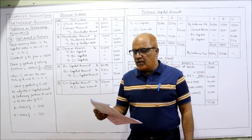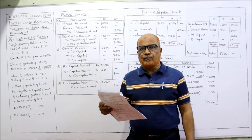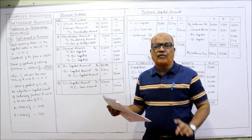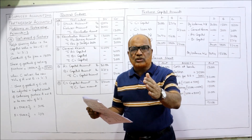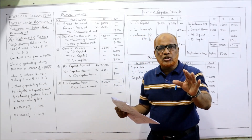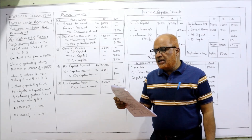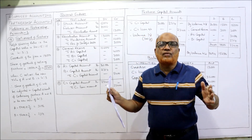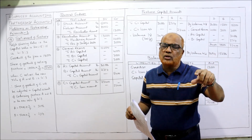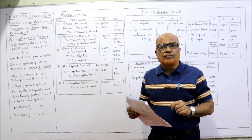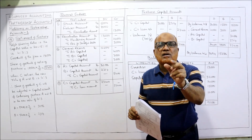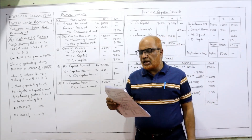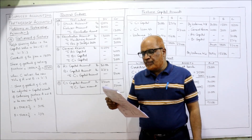The profit sharing ratio is the capital ratio. Capitals are 20,000, 15,000, and 15,000 — so 20:15:15, or simplified, 4:3:3. That is the profit sharing ratio. On the liability side, there is a general reserve. In the case of retirement, the general reserve will be distributed among all partners including the retiring partner. Then capital accounts, cash at bank, debtors, stock, machinery, and fixtures are given.